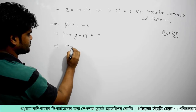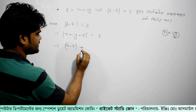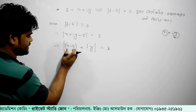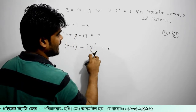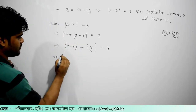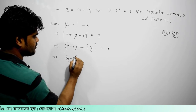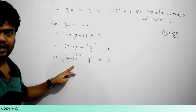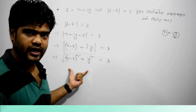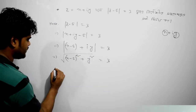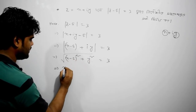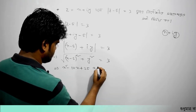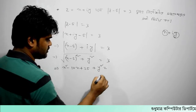Step by step calculate કરીએ: x² + y², and the next step gives us 9.